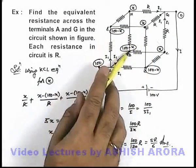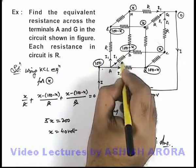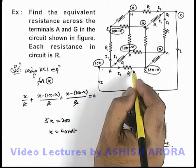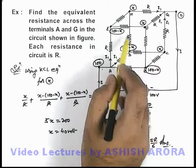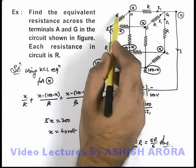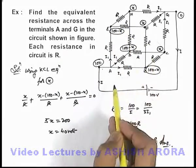Similarly here also, if we combine these 3 resistances, these 3 R, R and R are connected in parallel combination. And all the resistances in between 1, 2, 3, 4, 5, 6, these 6 resistances will also be considered in parallel combination.